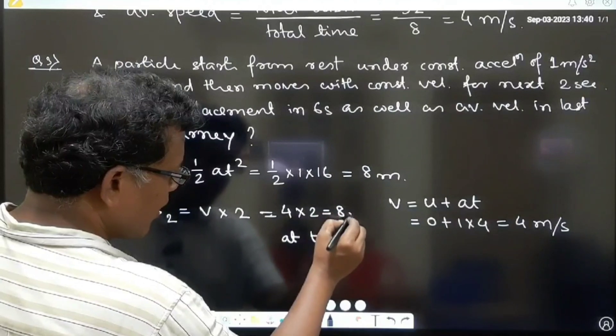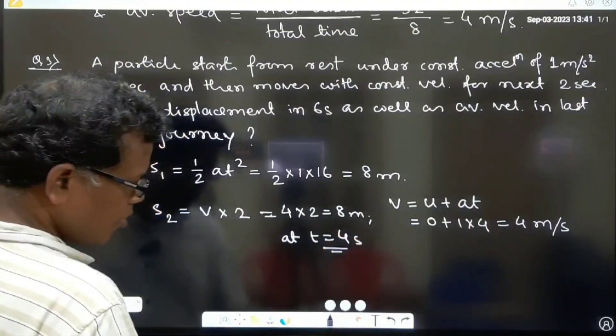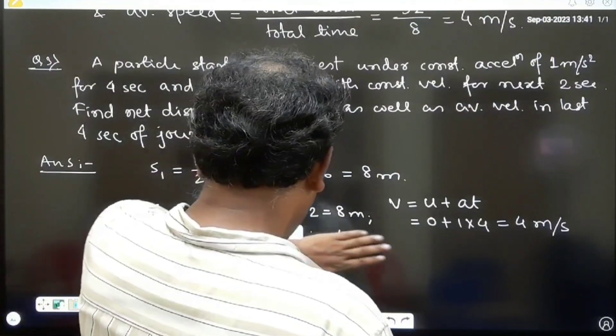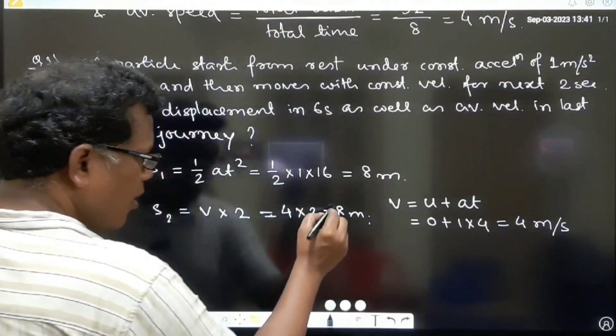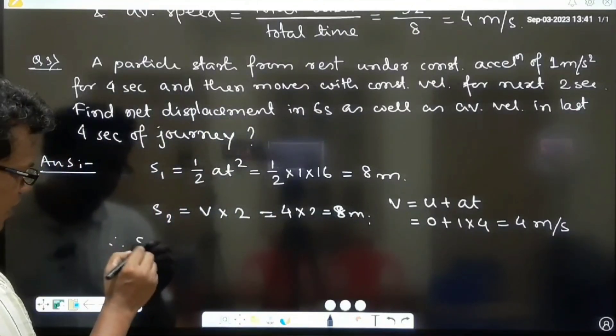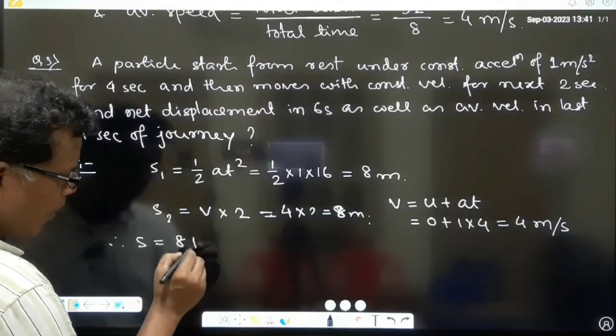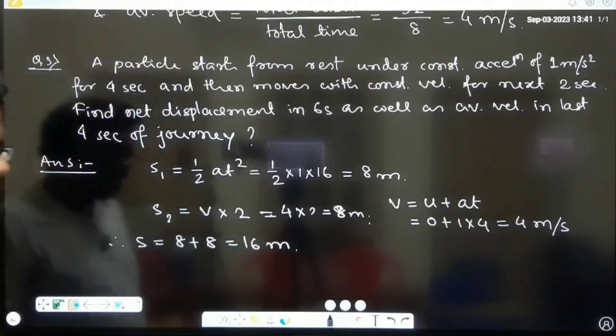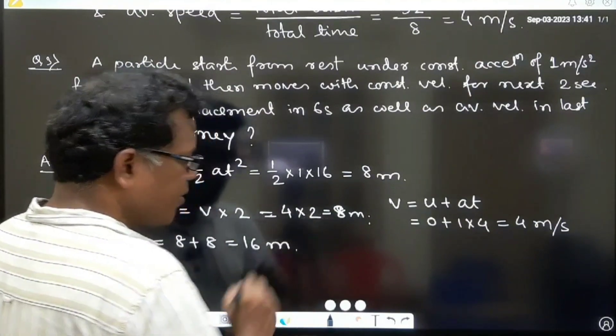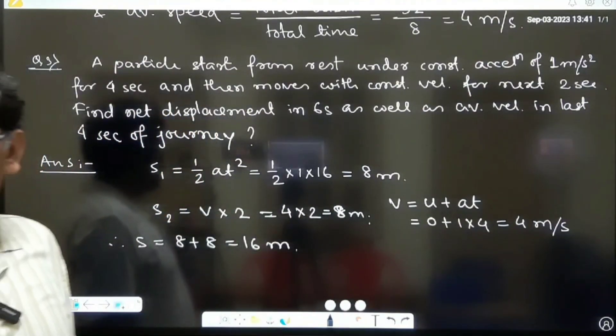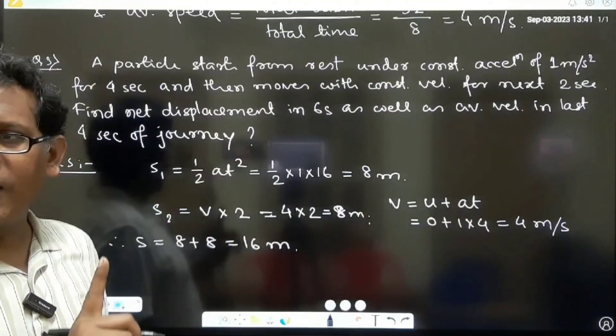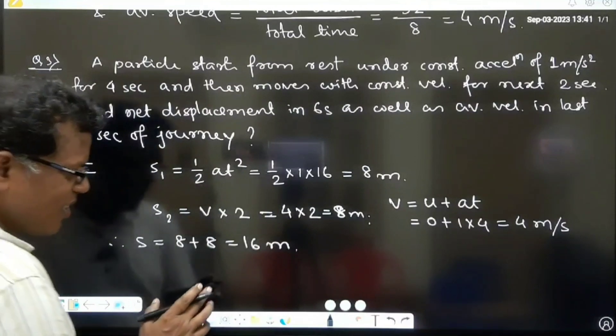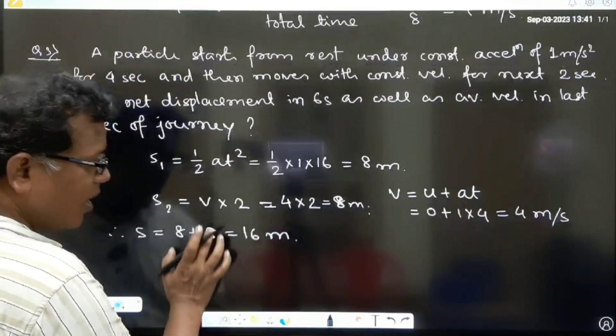So I have asked about the average velocity during the last 4 seconds. Meaning, last 2 seconds of accelerated motion and last 2 seconds of the constant velocity motion.